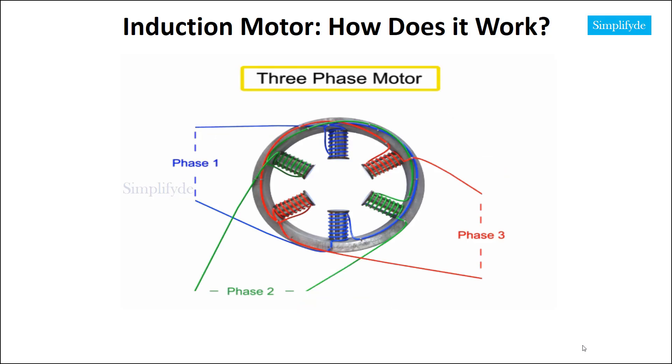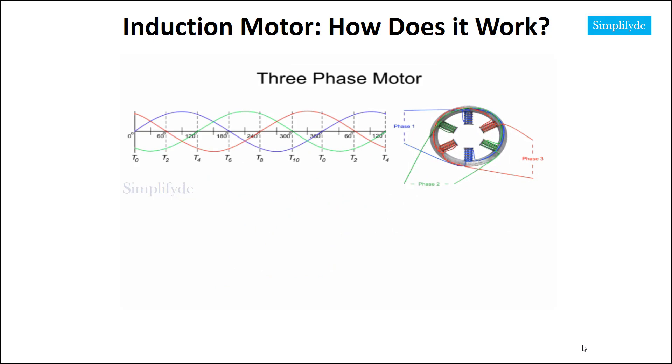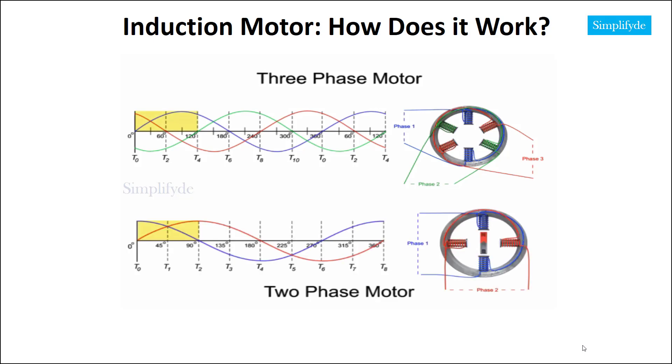In a 3-phase motor, more commonly used in modern applications, the alternating current inputs are displaced in time by 120 degrees rather than the 90 degrees of displacement found in the operation of a 2-phase motor.